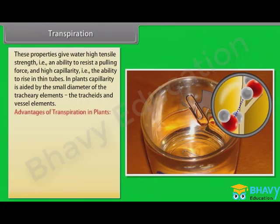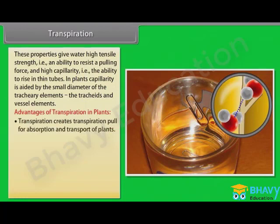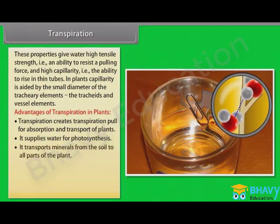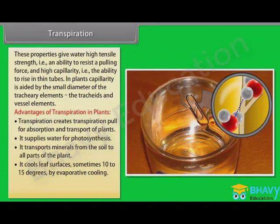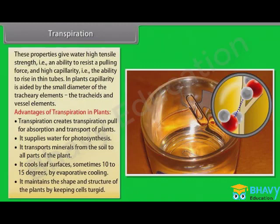The advantages of transpiration in plants include: it creates transpiration pull for absorption and transport of water; it supplies water for photosynthesis; it transports minerals from the soil to all parts of the plant; it cools the leaf surface — sometimes by 10 to 15 degrees — by evaporative cooling; and it maintains the shape and structure of plants by keeping cells turgid.